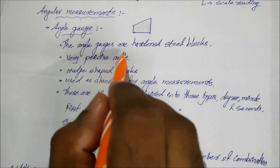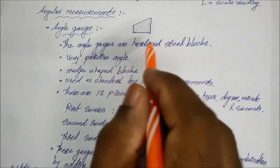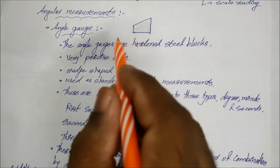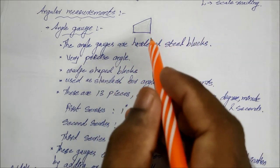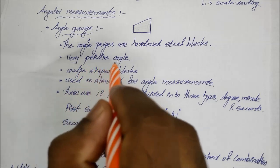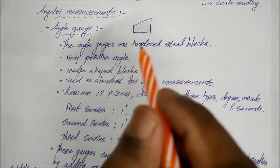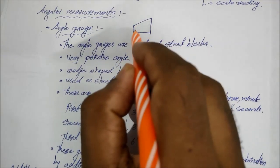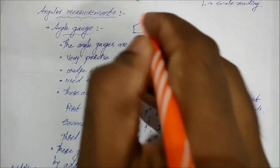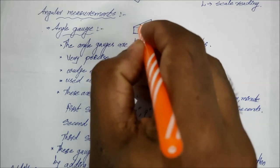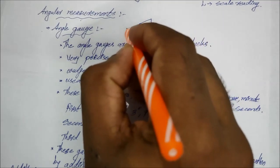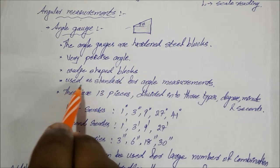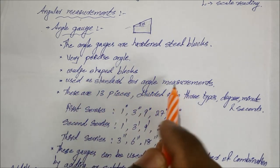The angle gauges are hardened steel blocks. They are hard and precisely made. They have a very precise angle theta, and are used as a standard for angular measurements.